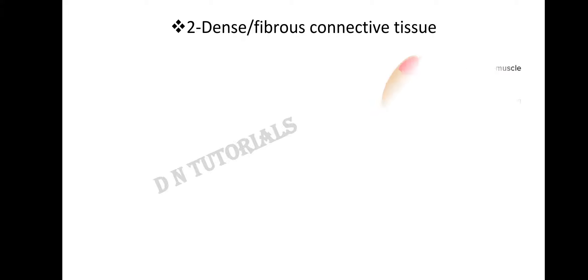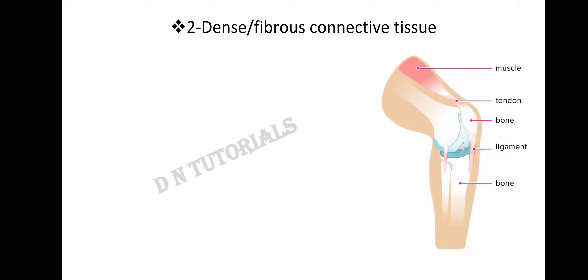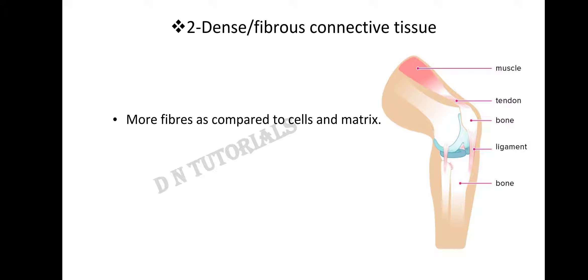Dense or fibrous connective tissue is different from the loose connective tissue. In the loose connective tissue we had bulk of matrix, but in dense or fibrous connective tissue we have more fibers as compared to the cells and the matrix. These three are the basic components of the connective tissue: cells, matrix, and fibers.